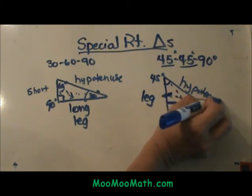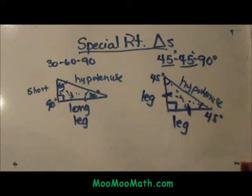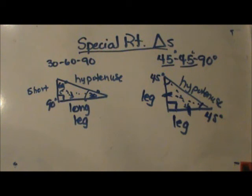And the hypotenuse is always, always the longest side in a right triangle. So I hope this overview of special right triangles was helpful. There are two other videos, one that focuses on solving 30-60-90 triangles and another one that solves 45-45-90 right triangles.